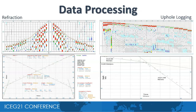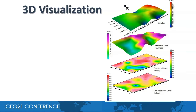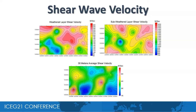These are some outputs from data processing. We can see first-break picking on refraction and uphole seismic records and the related time-distance graphs. The data processing provides the thickness and velocity information of near-surface layers. This is a 3D visualization of topography, thickness of the weathered layer, and compressional velocities of weathered and sub-weathered layers. The shear wave velocity is computed from compressional velocity using Lee's transform for unconsolidated rocks. Here we can see the shear wave velocity distribution for weathered and sub-weathered layers. Finally, we have the average shear wave velocity map for the top 30 meters of soil, which is required for computation of various engineering parameters.